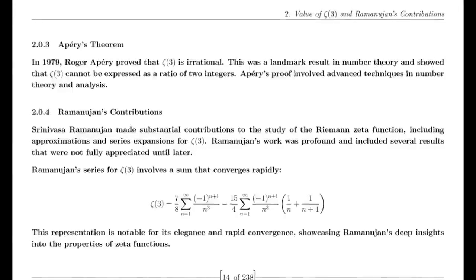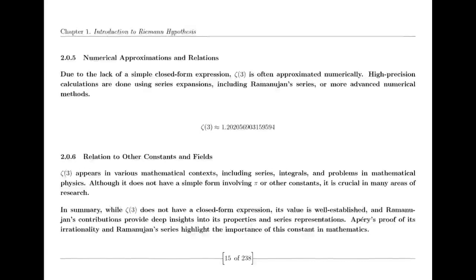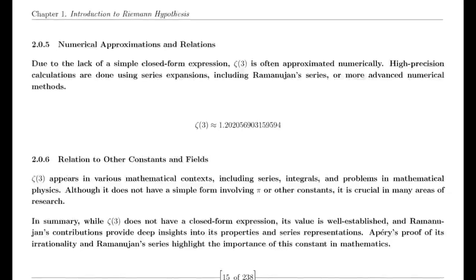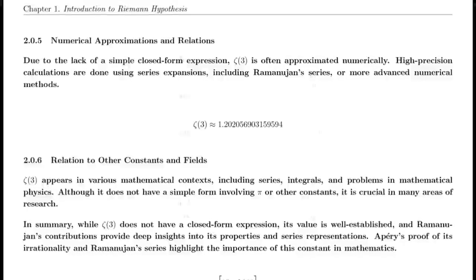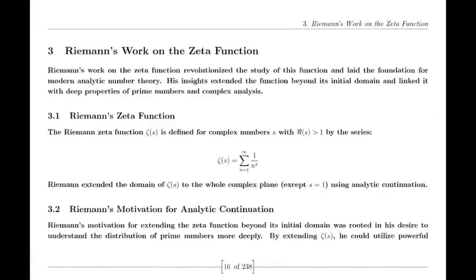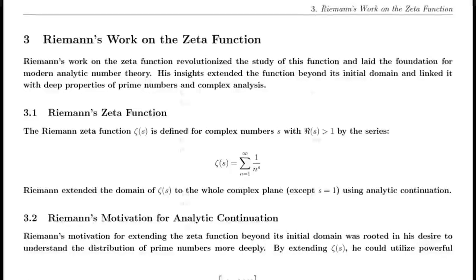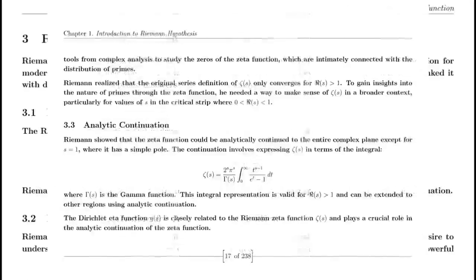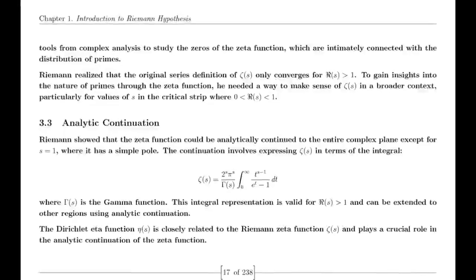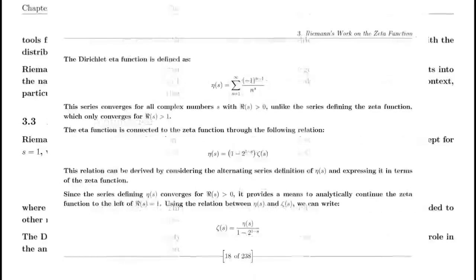Finally, we address the Riemann hypothesis itself. Riemann proposed that all non-trivial zeros of the zeta function lie on the critical line where the real part of s is one-half. This hypothesis has profound implications for number theory, particularly in understanding the distribution of prime numbers. Despite extensive numerical evidence supporting it, a formal proof or disproof remains one of the greatest challenges in mathematics.